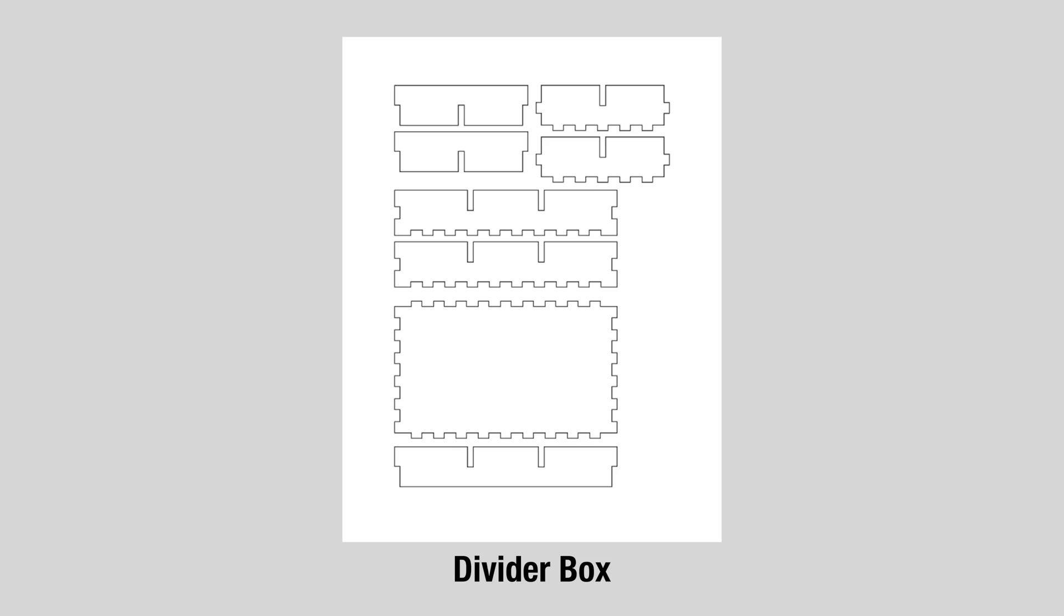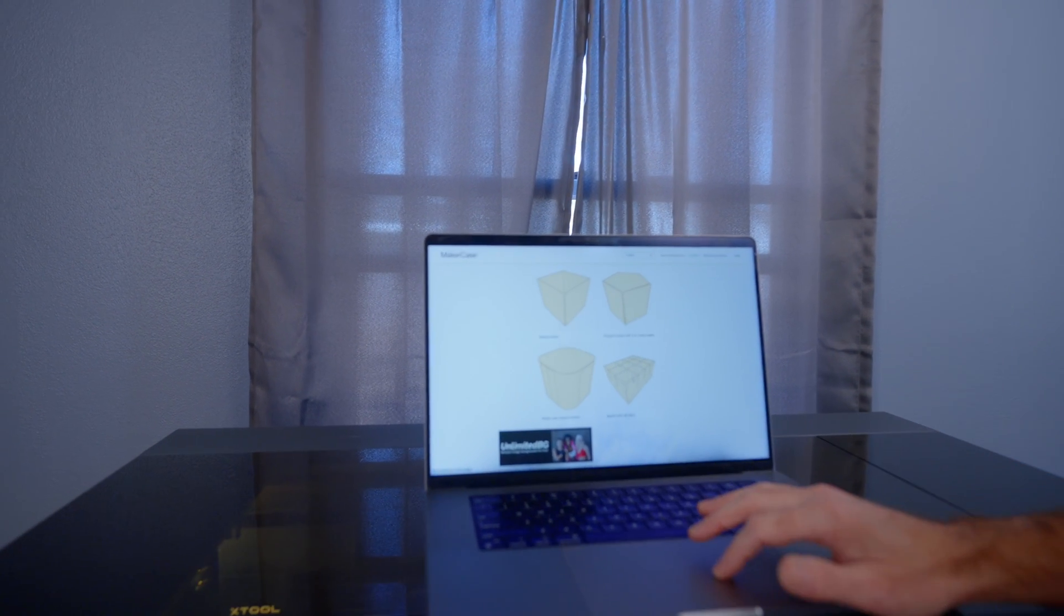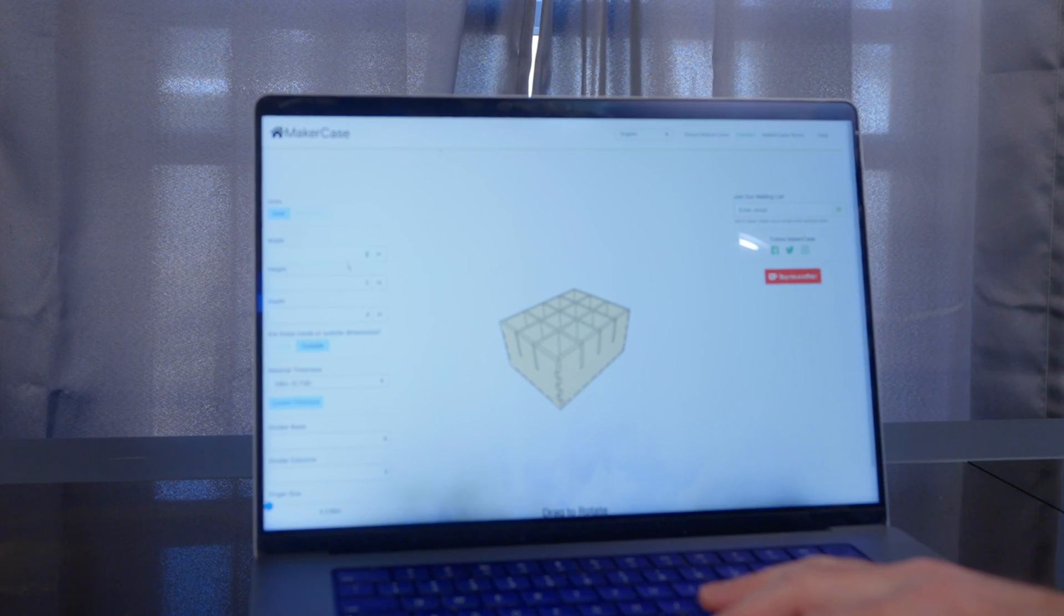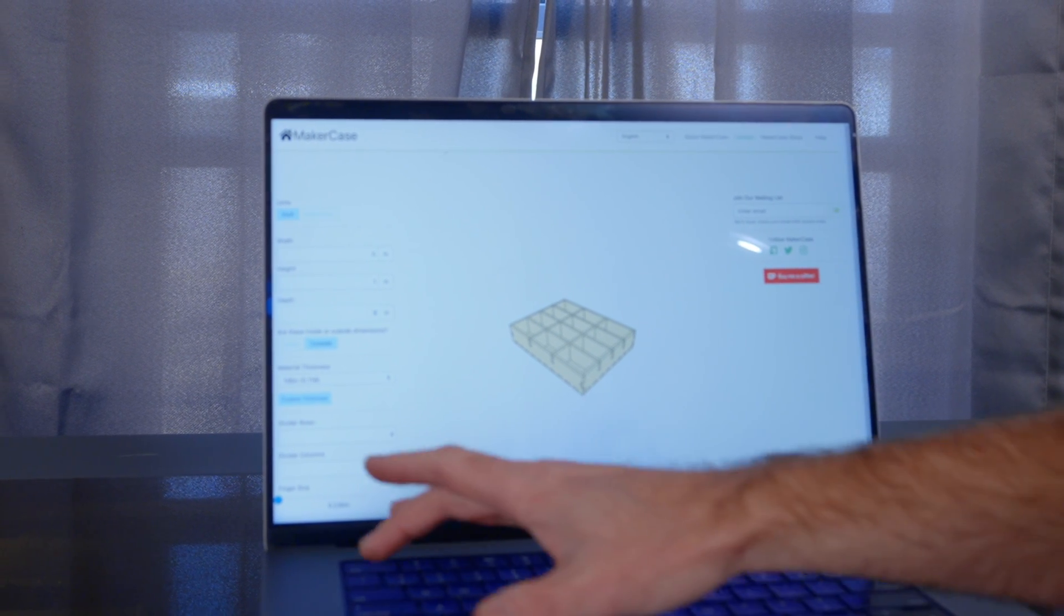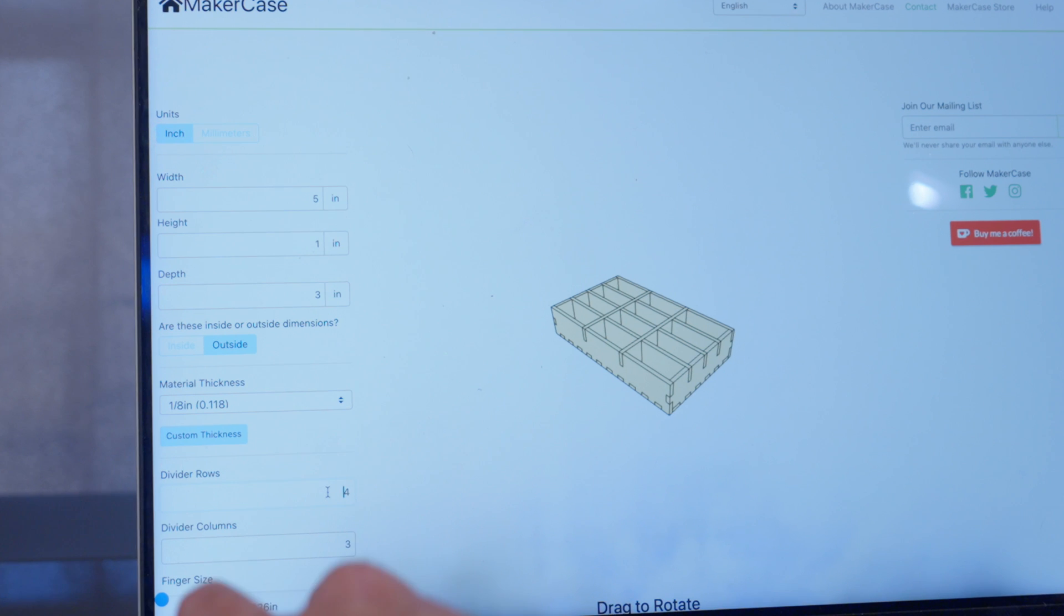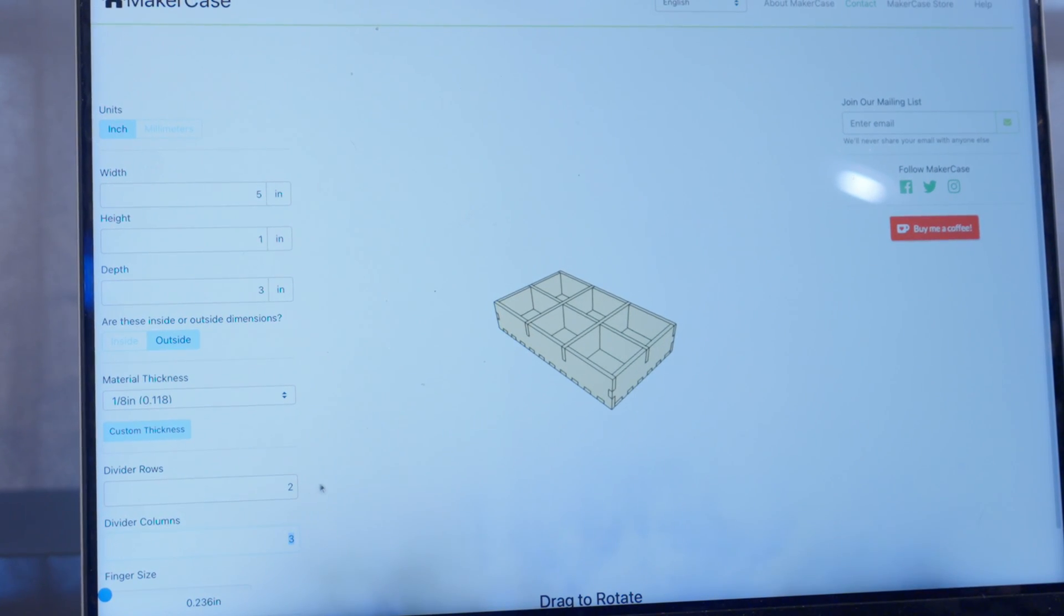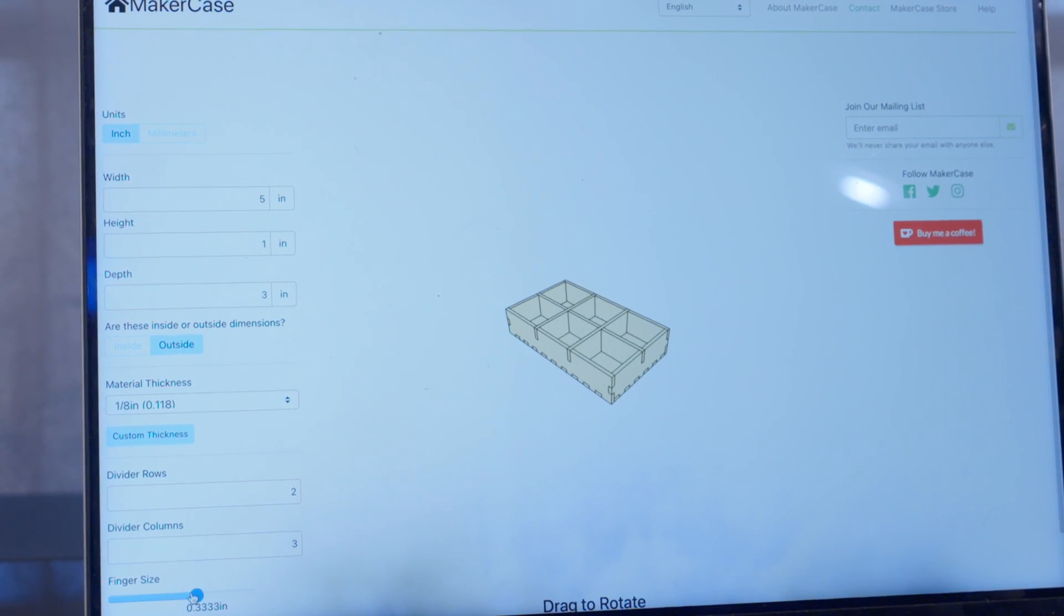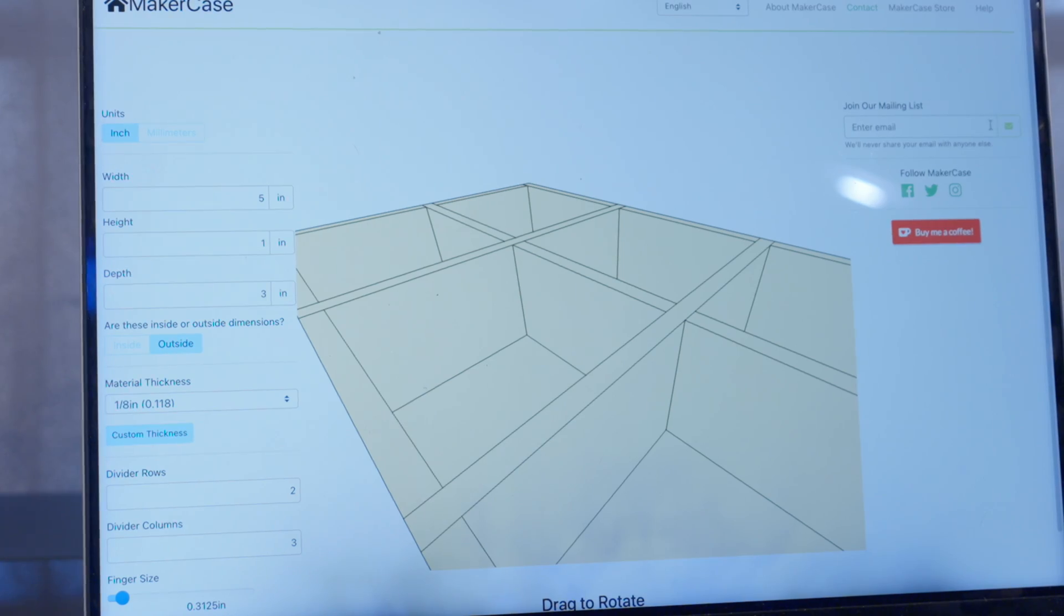Up next, we're going to make a simple little box. This is an awesome website called Maker Case, and we're going to do this box with dividers here. We'll go width of five, a height of one, and a depth of three. Then we can choose how many rows we want for the dividers. Let's say two. That's looking pretty good. And now we can also choose our finger size, if you know what I'm saying, and download the plans.